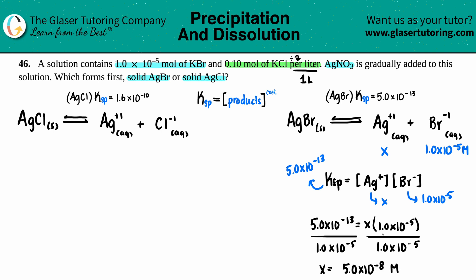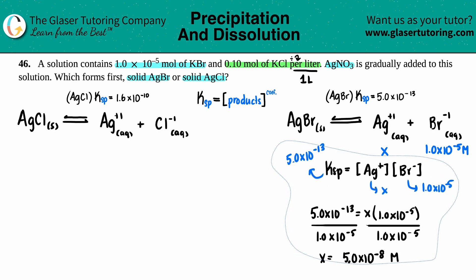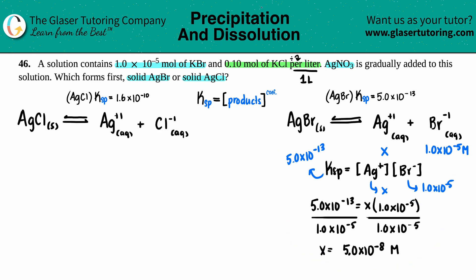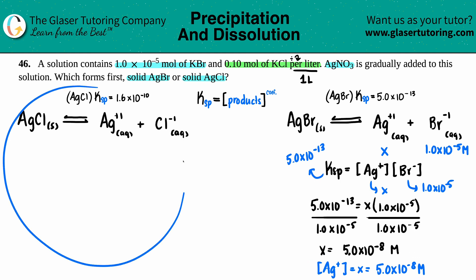So the Ag⁺ concentration needed to begin precipitating AgBr is 5.0×10⁻⁸ M. We'll use this result right after we solve for the AgCl case.